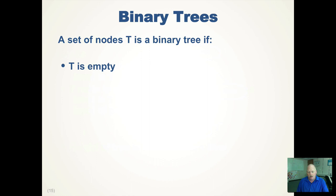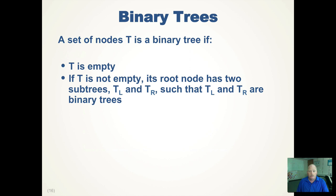A binary tree is a special kind of tree defined recursively. A set of nodes T is a binary tree if T is empty, or if T has a root node with two subtrees, tree-left and tree-right, such that tree-left and tree-right are also binary trees. So basically you have nodes with two branches, left and right, and they can be empty, full, or have subtrees below them.